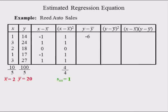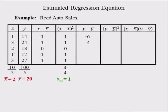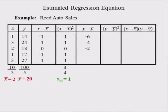The first deviation from the sample mean for variable Y is found by subtracting the first observation of Y, 14, from Y-bar, 20. This difference is equal to 14 minus 20, or negative 6. The second deviation from the sample mean for variable Y is found by subtracting the second observation of Y, 24, from Y-bar, 20. This difference is equal to 24 minus 20, or 4. The third deviation from the sample mean for variable Y is found by subtracting the third observation of Y, 18, from Y-bar, 20. This difference is equal to 18 minus 20, or negative 2.